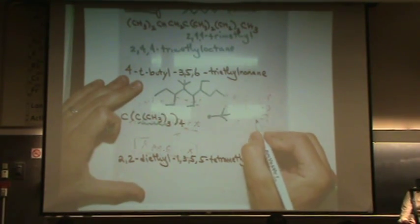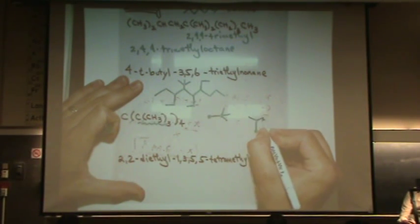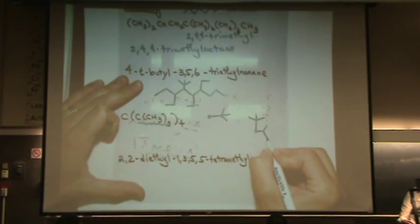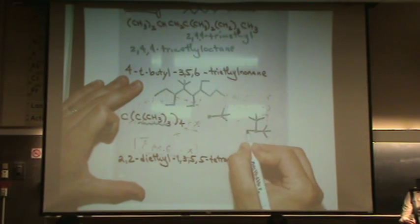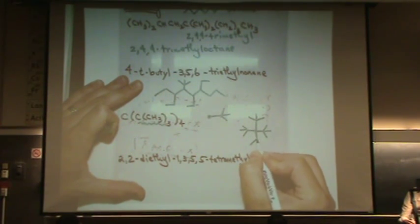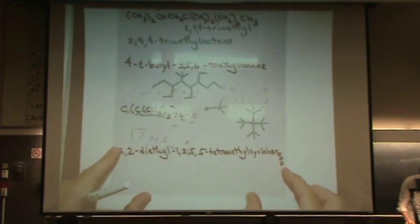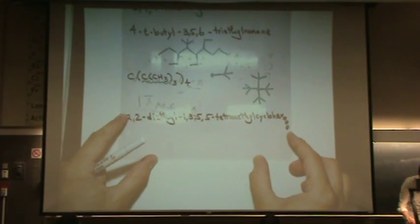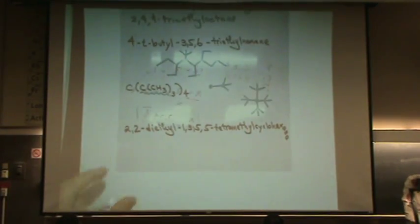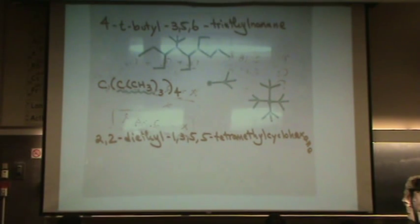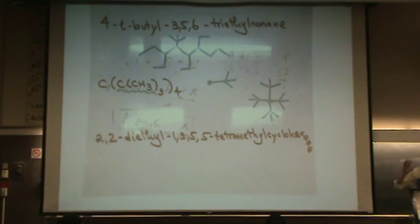So this carbon with three carbons on it is a t-butyl. So there are four of these t-butyls attached to a central carbon. So here's the central carbon. I'm going to draw four t-butyls. Is that a beautiful little snowflake? So I thought of that last night. Had to add it.